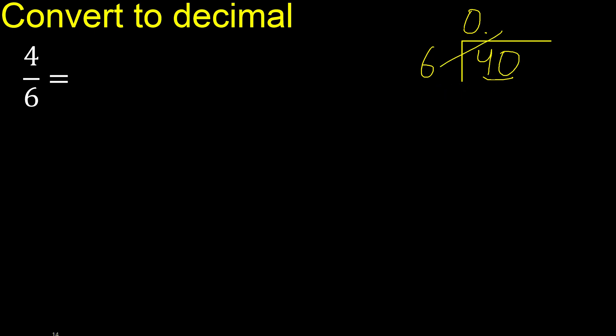Which number is nearest to 40 but not greater? 6 times 7 is 42, which is greater. So we multiply 6 times 6, which is 36. That is not greater than 40. 40 minus 36 is 4.